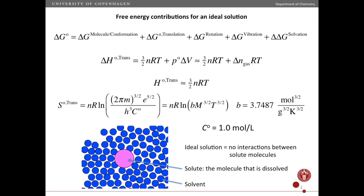Here I list the free energy contributions for an ideal solution. This is the delta G standard for a molecule — in this case a pink molecule — that's dissolved in a collection of other identical molecules, which is the solvent. For example, this could be water molecules, and this could be a molecule dissolved in water. This is the standard free energy change associated with this molecule. It's for an ideal solution, meaning that there are no interactions between solute molecules. In an ideal gas, there are no interactions between any molecules. In an ideal solution, there's no interaction between this molecule and a similar pink molecule somewhere else, but there are interactions with the solvent.